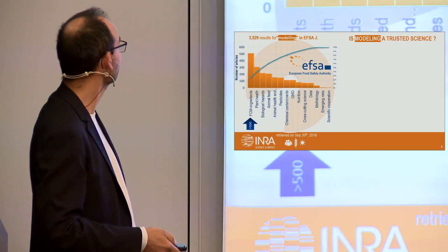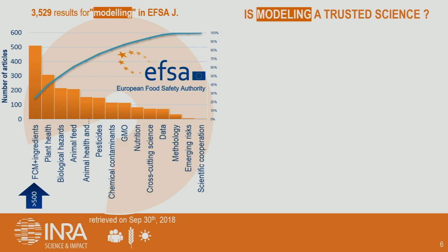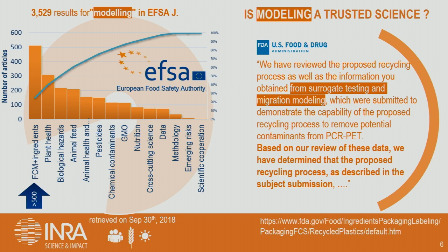The question is: is modeling a trusted science? If you look at just one journal — the SCI journal — and search for the word 'modeling' with respect to food contact materials and ingredients, you have 500 papers using modeling. That's really impressive. Modeling is used for many applications, not only in the EU but also in the US. For example, in a recycling process submitted and reviewed by FDA, they agreed: based on surrogate testing and migration modeling, we consider the process is safe. That's starting to become common practice.